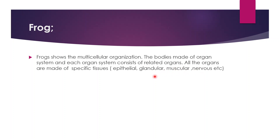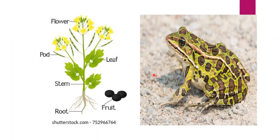This is the mustard plant. This is the flower, this is the fruit, and this is the root. The old leaves are in the lower part and the new leaves are in the upper part. These are the flowers, these are the pores, and these are the leaves. This is a common diagram of a frog.